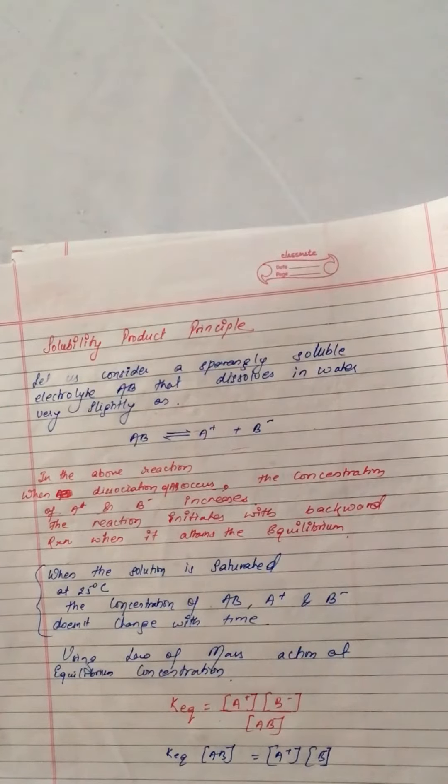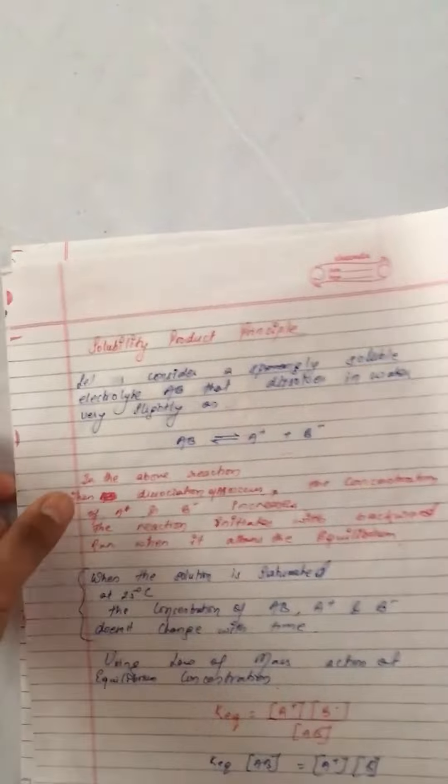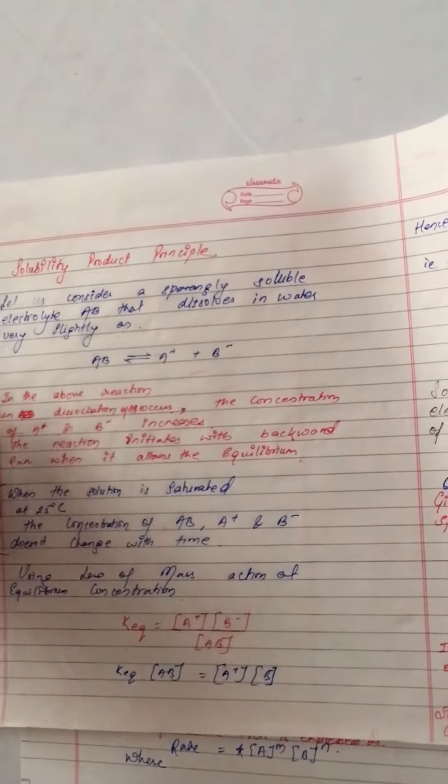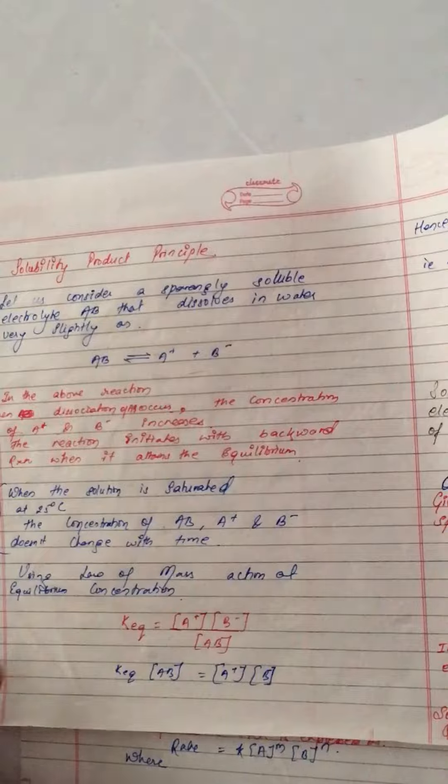Using the law of mass action, at equilibrium constant KEQ, we can write the equilibrium condition: AB is equal to A+ and B-.